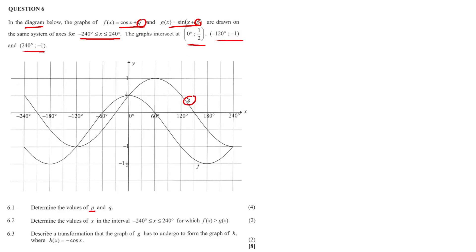Here's our g graph. Remember, the sine graph is meant to begin at the origin — the mother graph of the sine graph begins at zero degrees. Now it's starting at negative 30, so it has shifted 30 degrees. This is a leftward shift, and left shifts are positive — you know that from functions. So p is equal to 30.